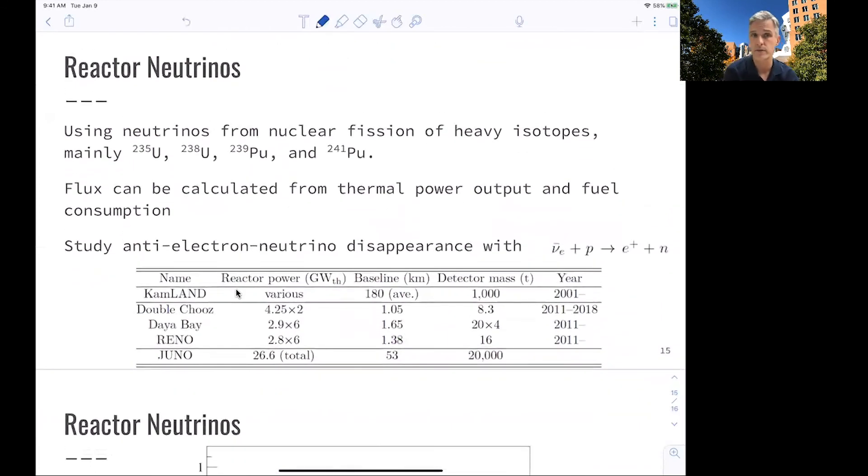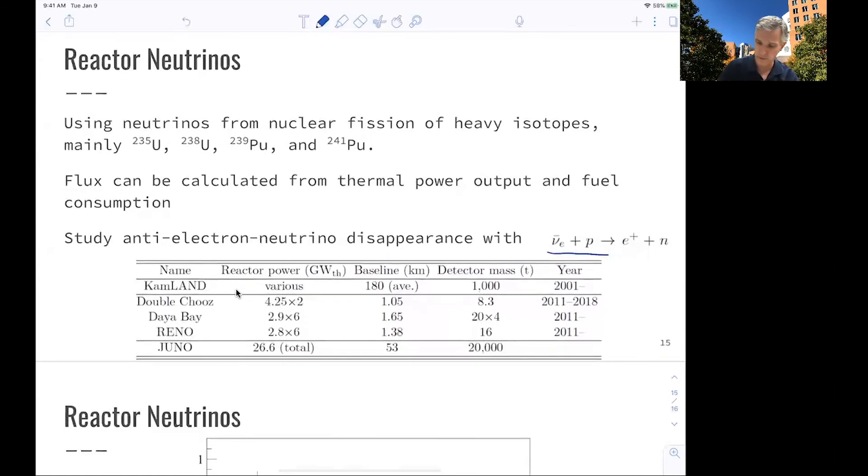All right. The last source is reactor neutrinos. We will talk about nuclear physics starting from next week. Here, neutrinos are produced in nuclear fission of heavy isotopes, mainly uranium and plutonium. The flux can be calculated in various ways, for example, by knowing the nuclear processes and the thermal power produced in the reactor, or by just looking at how much nuclear fuel is being used by the reactor itself. What's being studied here is the anti-electron neutrino disappearance. And what you do here is use this inverse beta decay where you have a collision or scattering of an anti-electron neutrino with a proton, creating a positron and a neutron.